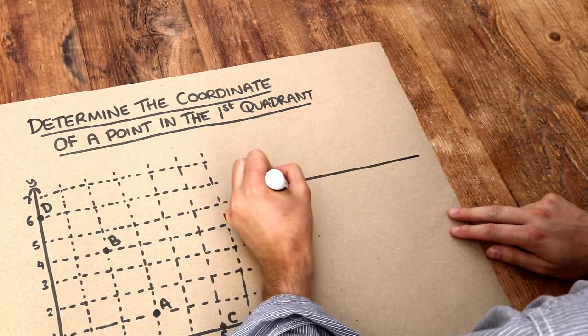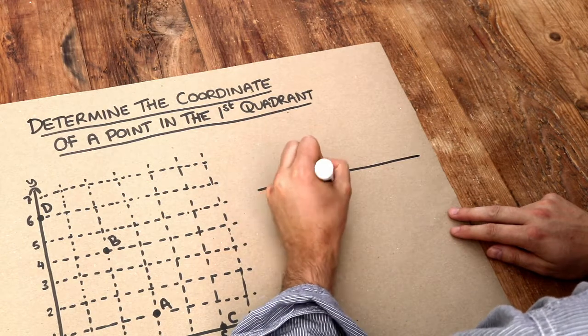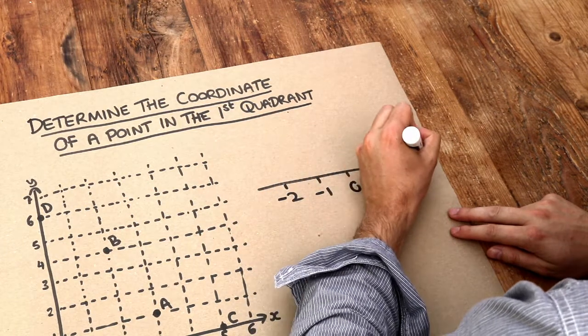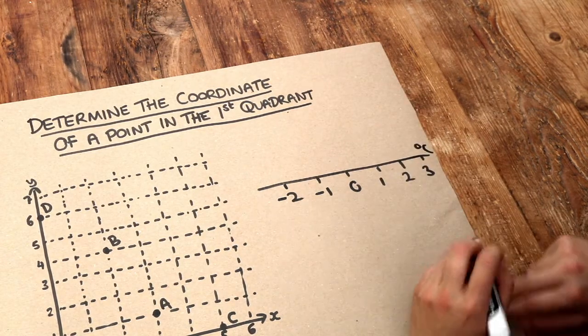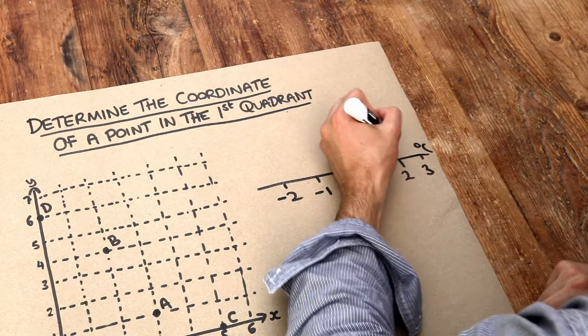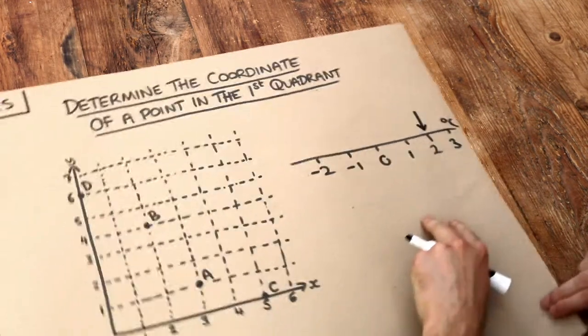So temperature for example, I might have a number line with these values on it and this could be a temperature in Celsius. If I said it was say 2 degrees Celsius, then I can indicate my position on the number line.